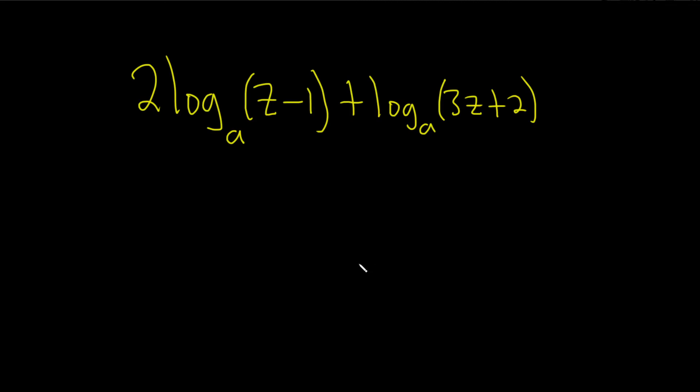In this problem, we have two logarithms, and the question is to write this as a single logarithm whose coefficient is 1. So, we have a plus between the two logs, so the idea here would be to use something called the product rule.